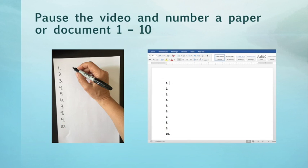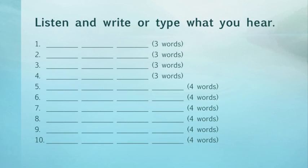To help you hear this type of coalescence, I'm going to say ten phrases. Please write what I say. If you need to, pause the video and number a paper or document one through ten. So again, listen and write or type what you hear. Each line will tell you the number of words in the phrase. Here we go.